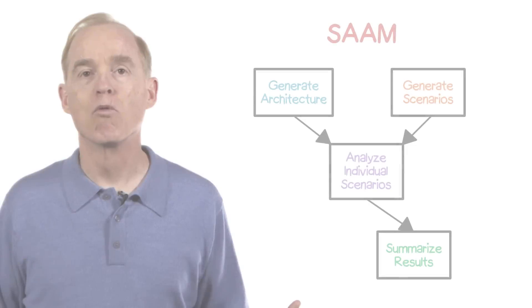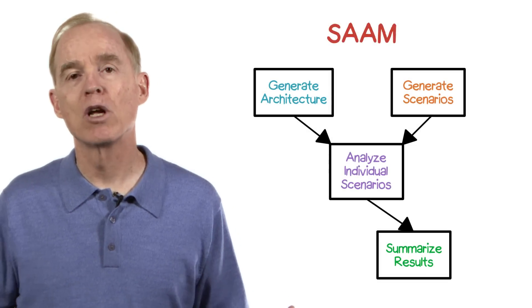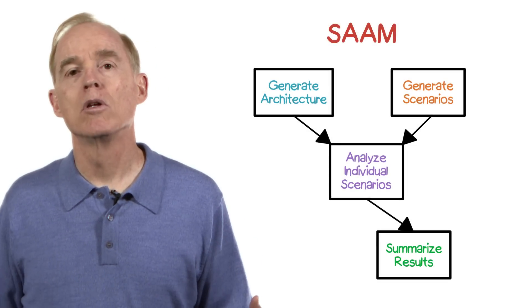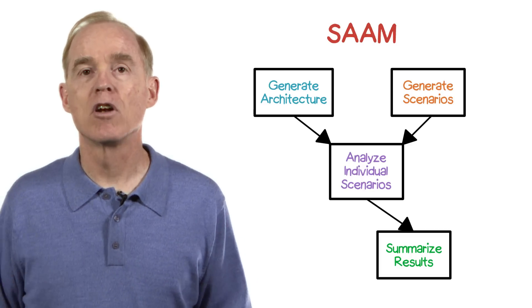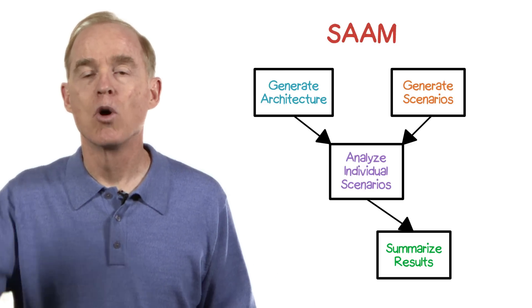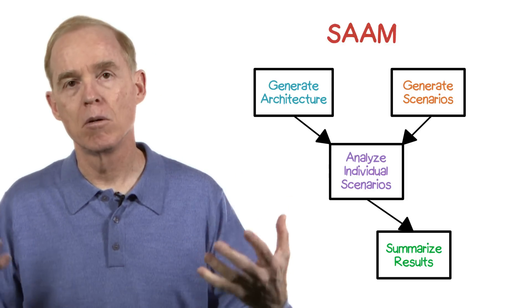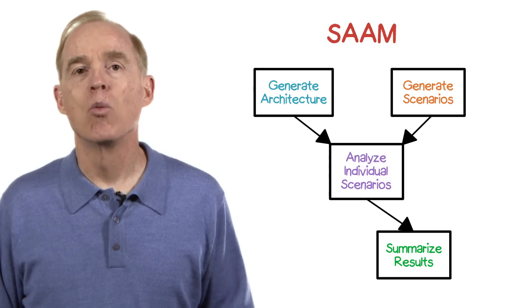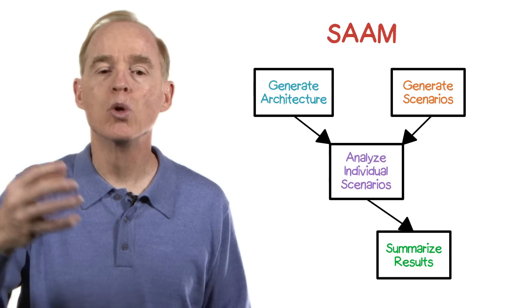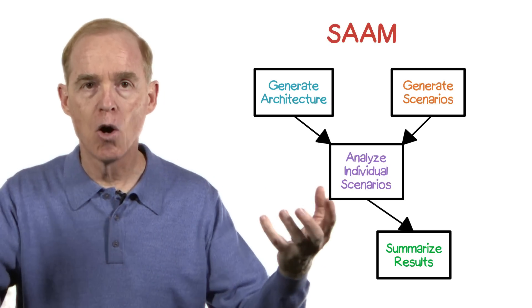Now these are not primarily usage scenarios, or we could think of them as elaborated usage scenarios, where instead of looking at it from the outside external view, we're looking at it more internally. For example, if the external request is by the user to compute some result, the generated scenario the team provides is: which elements of the architecture are required to be involved in providing that functionality, and in what order? We essentially walk through the diagram and see how that particular usage of the system impacts the architecture.